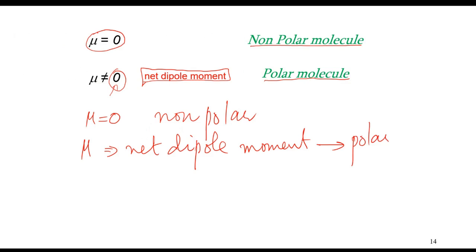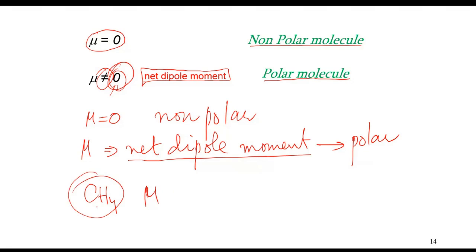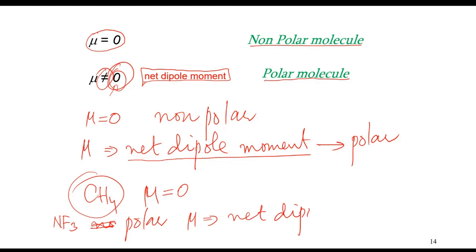For example, CH4 is a nonpolar molecule, so its dipole moment will be zero. NF3 is a polar molecule, so it has a net dipole moment. If a molecule is polar, it has a net dipole moment.